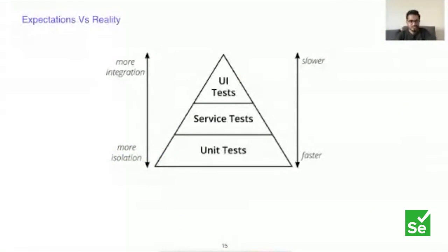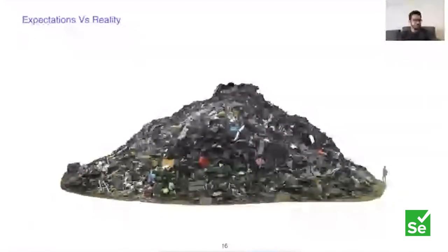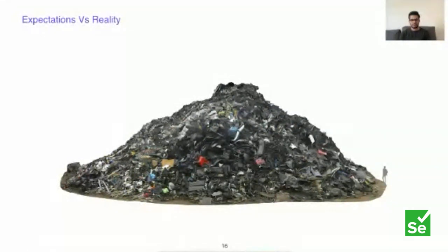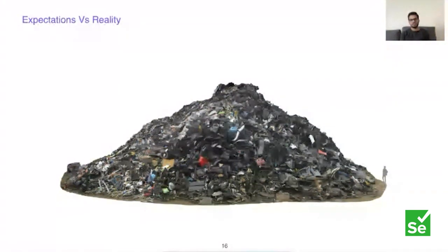Talking about challenges of speed and reliability: we have the test pyramid. The expectation is that UI tests should be as few as possible, but the reality is often an inverted 'garbage pyramid' — a heap full of UI tests. Our situation at Bumble is not very different. We have 1400 tests, and as I showed, 1400 tests means almost zero probability of getting a green build.